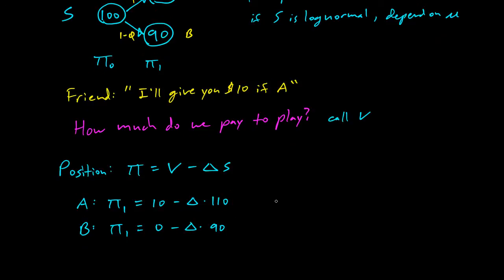Now we can do a little bit of math here. We can say 10 minus delta times 110 equals 0 minus delta times 90, and solve for delta, and we get delta equals 1/2. So this is a choice for delta that means pi_1 has no uncertainty.